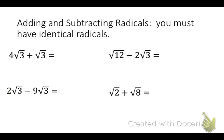Whenever you add or subtract radicals, you have to have identical radicals. In our first example, square root 3 and square root 3 are identical — they have to be the same. It doesn't matter what coefficient is out front; it just matters what's inside the radical. So I have 4 square root 3 plus — anytime there's no coefficient, I can put a 1 — so 4 square root 3 plus 1 square root 3 equals 5 square root 3.